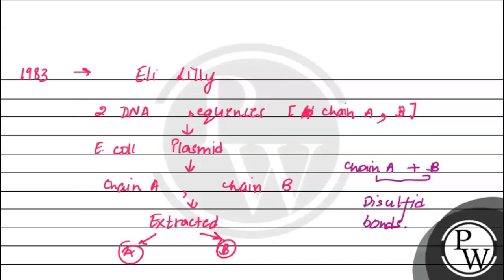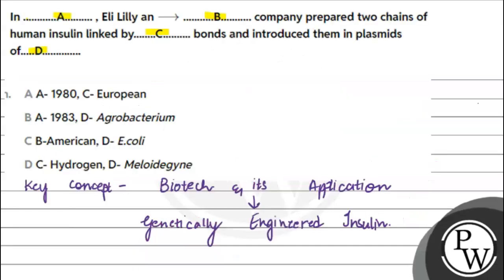That's how Eli Lilly made insulin. Let's see what will be the answer. In A, A will have the year. In the year 1983, Eli Lilly and Dash company. Eli Lilly was an American company. So B is American.